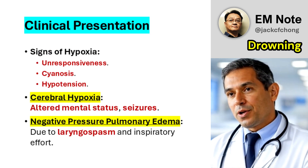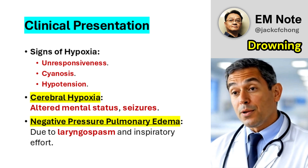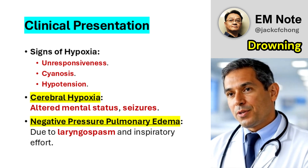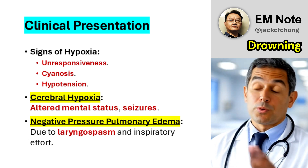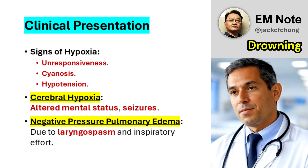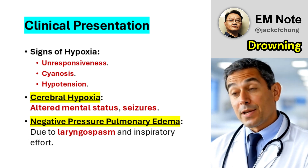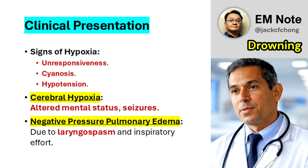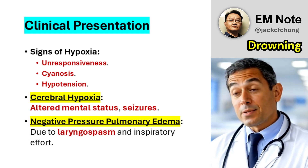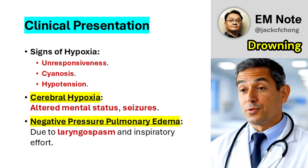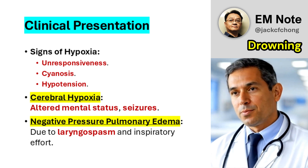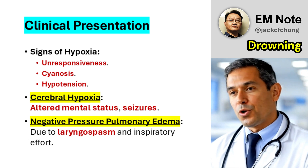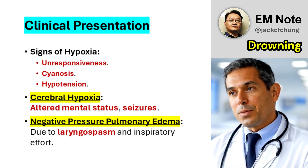Patients who survive the initial event and reach medical attention usually present with signs of severe hypoxia, including unresponsiveness, hypotension, cyanosis, and signs of cerebral hypoxia such as seizures or altered mental status. In addition, rapid airway obstruction due to laryngospasm can lead to negative pressure pulmonary edema, a condition where fluid leaks into the alveoli because of extreme inspiratory effort against a closed glottis.